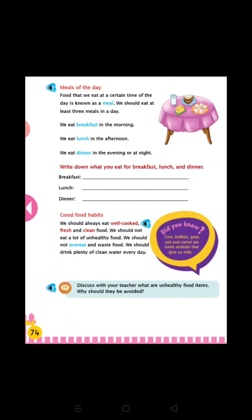We should eat at least three meals in a day: breakfast, lunch, and dinner. We eat breakfast in the morning, we eat lunch in the afternoon, and we eat dinner in the evening or at night. Now write down what you eat for breakfast, lunch, and dinner.